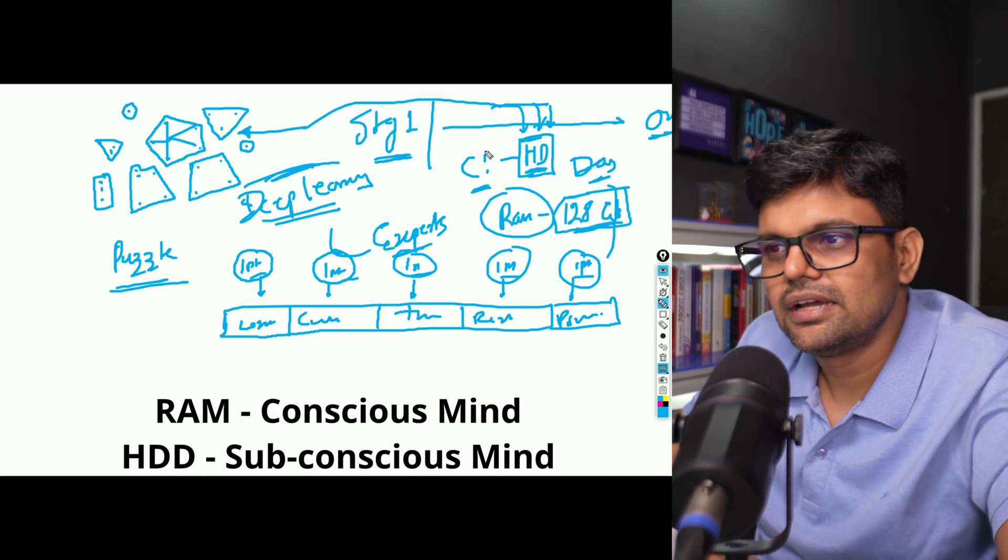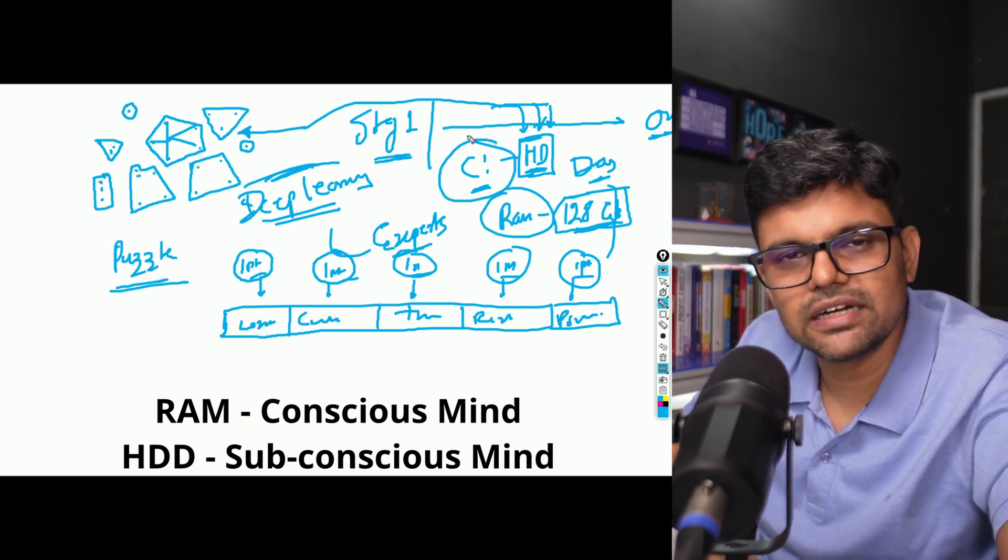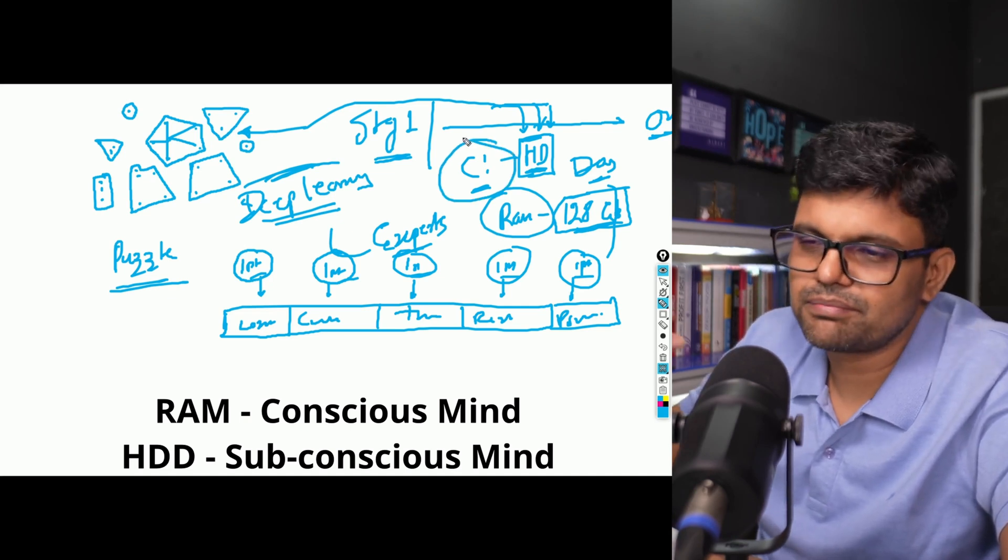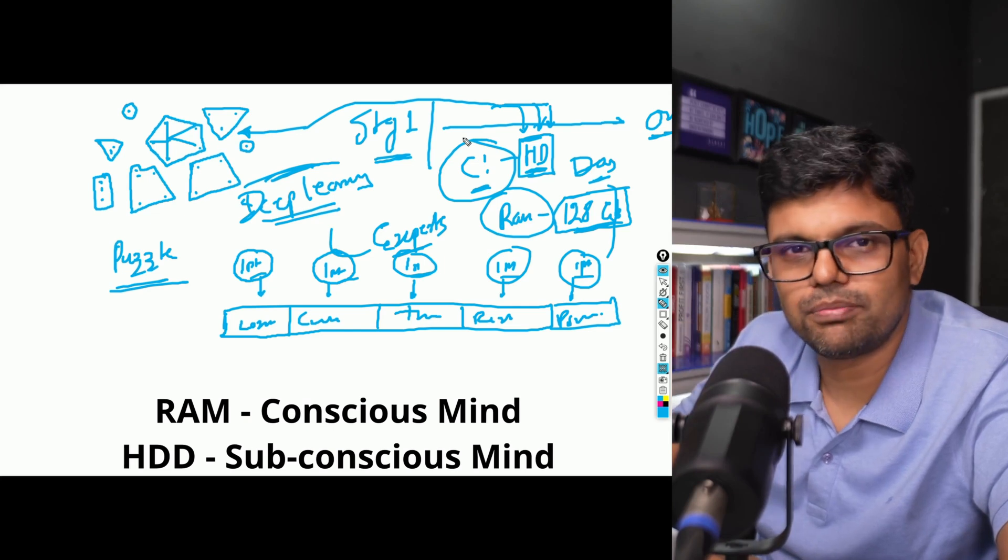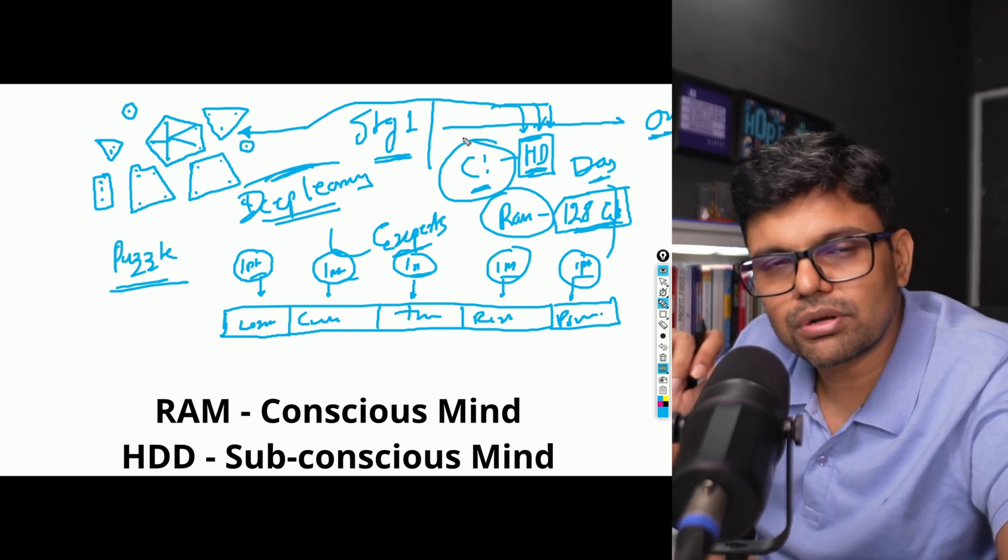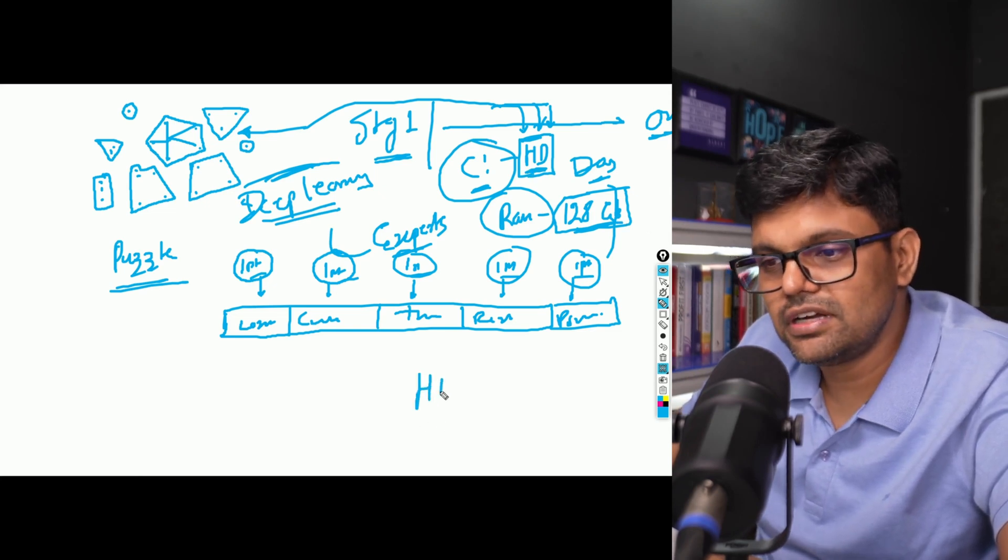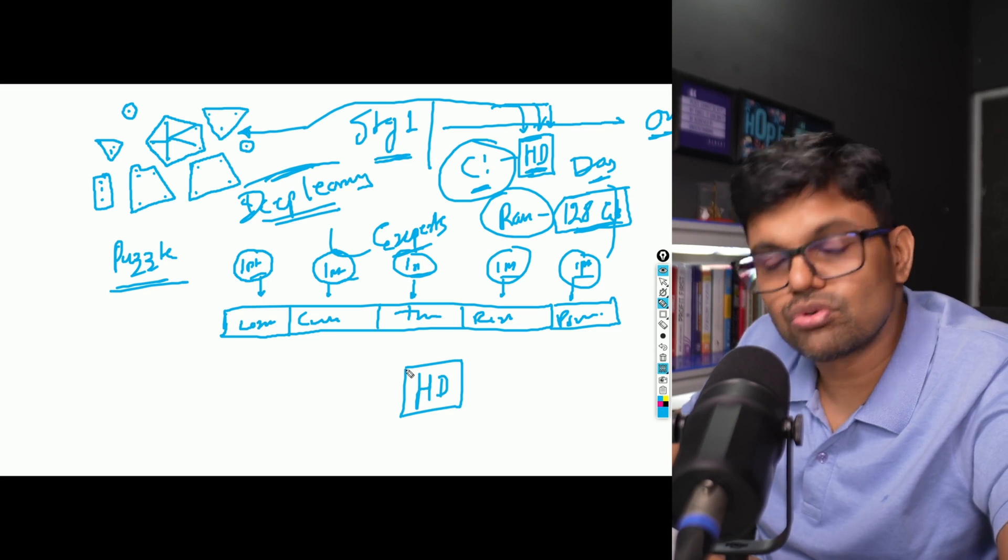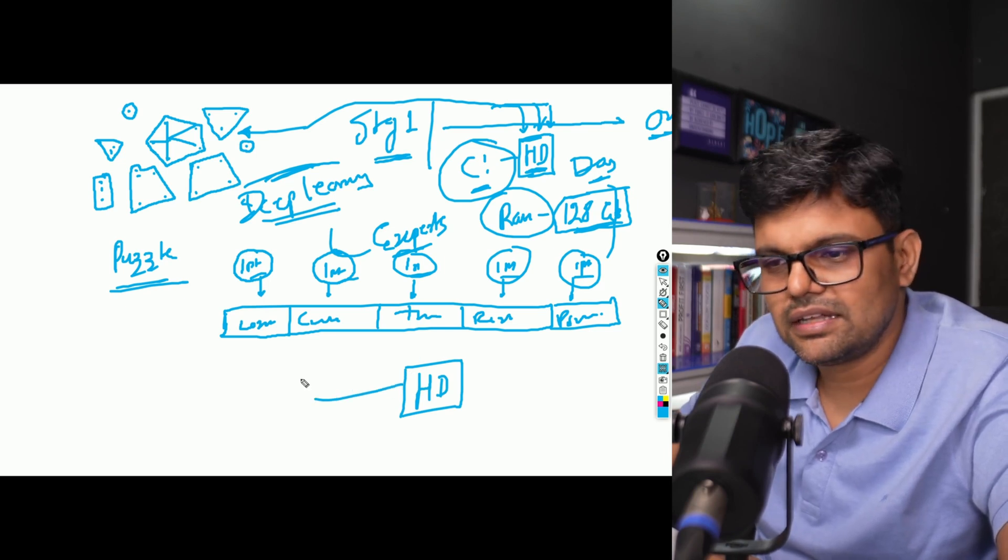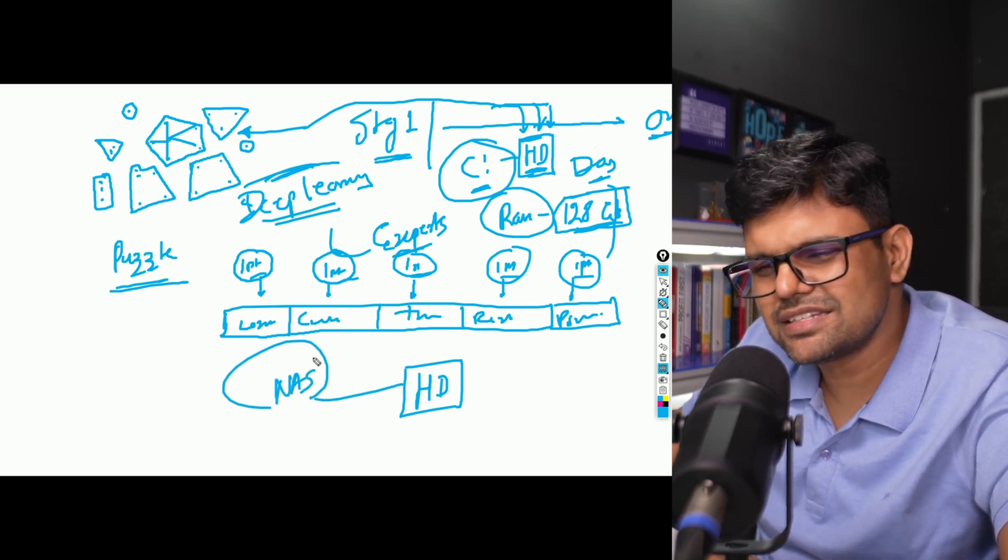So giving the example of computer again, like if you start cramming everything in C drive, like everything people are storing on desktop or documents folder, your computer becomes slow. So you have to move it to even deeper storage, storage disks. And then now people have something called this. This goes on.